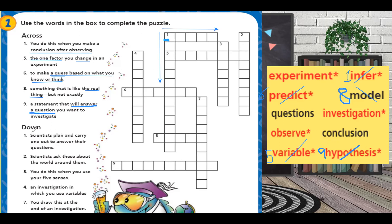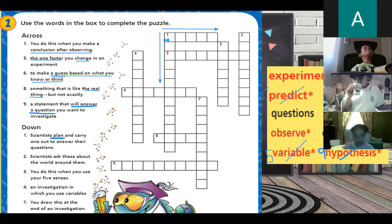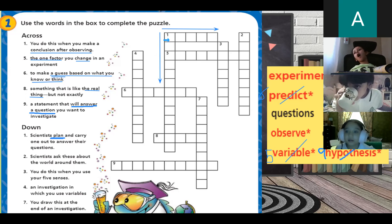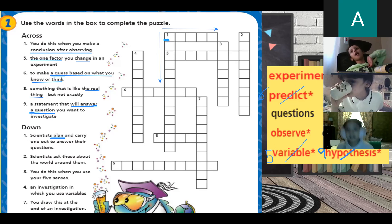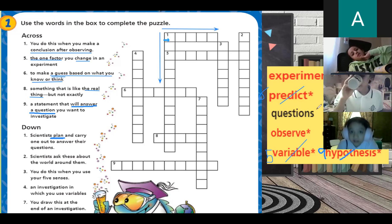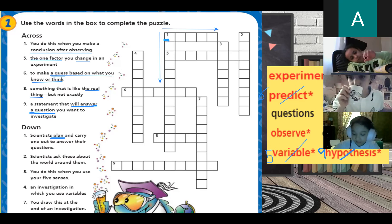Number one, going down: scientists plan and carry one out to answer their questions. What do they plan? They plan to investigate. Investigation is number one down. Excellent, good job.